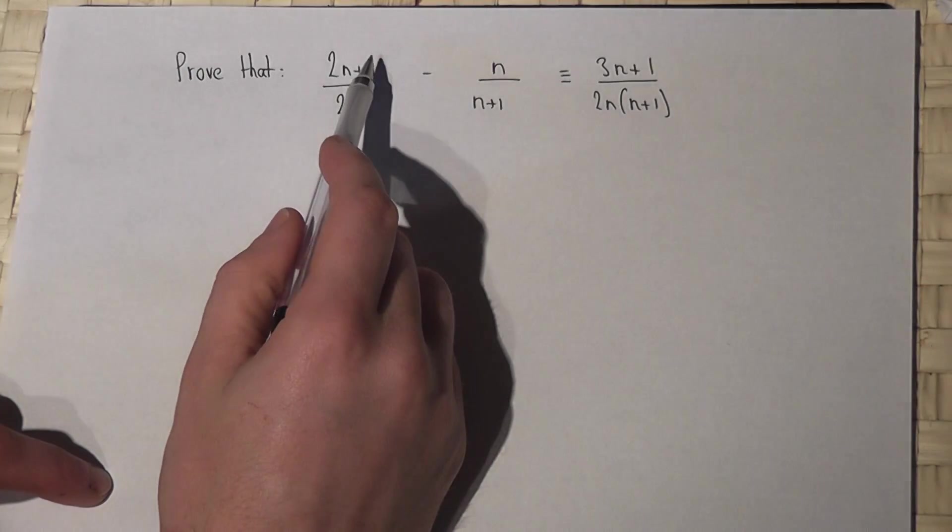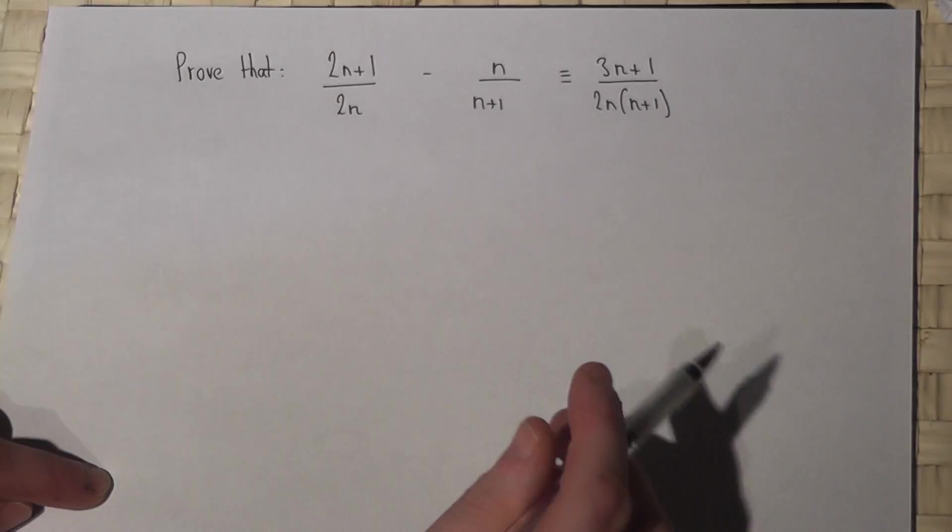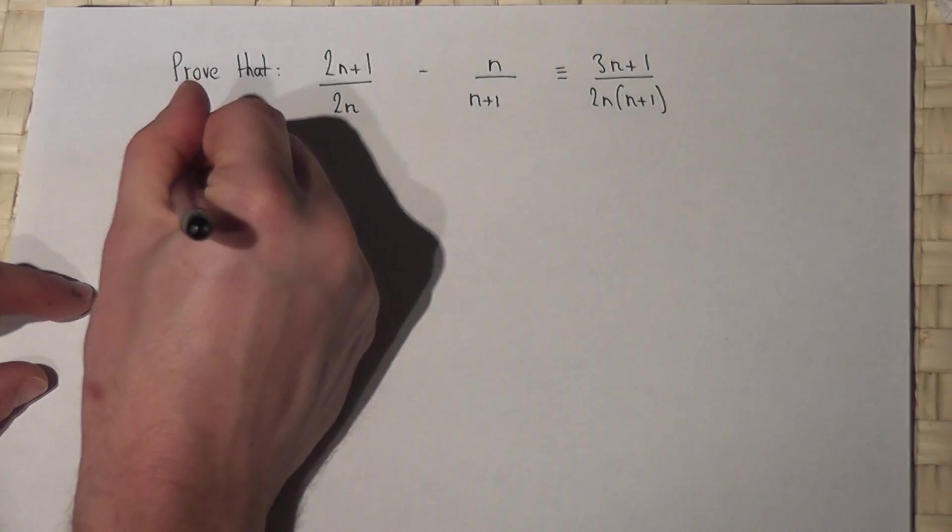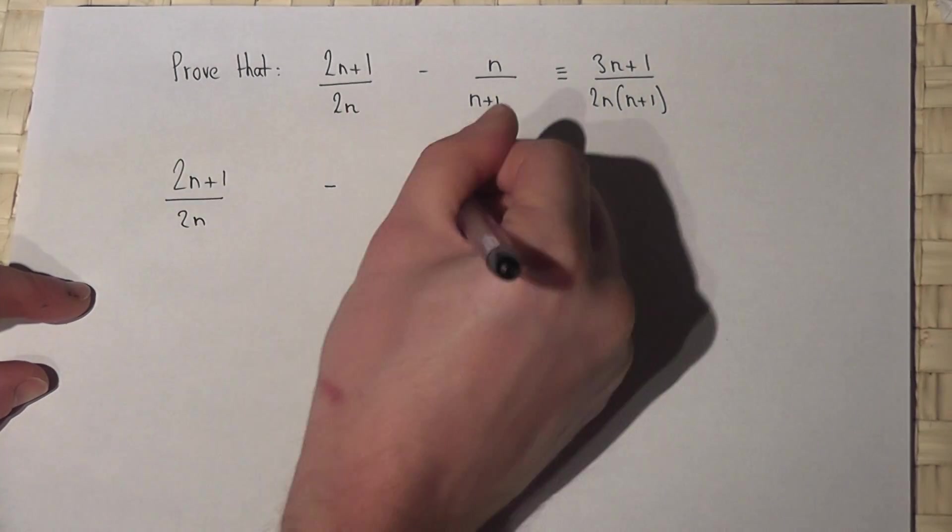In this question we're asked to prove that this fraction take away this fraction has this as an answer. The method is to work out this expression: (2n+1)/2n - n/(n+1).